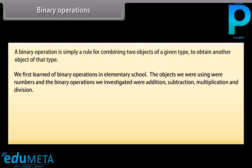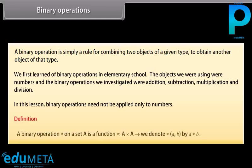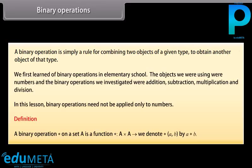Binary operations need not be applied only to numbers. Definition: A binary operation * on a set A is a function * from A cross A to A. We denote *(A, B) by A * B.